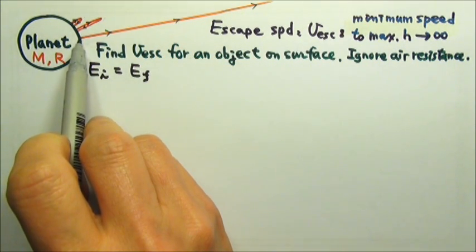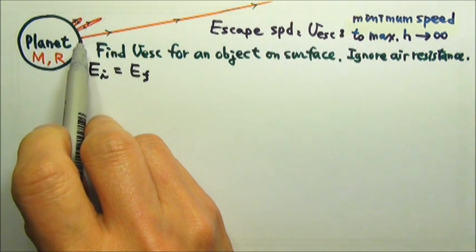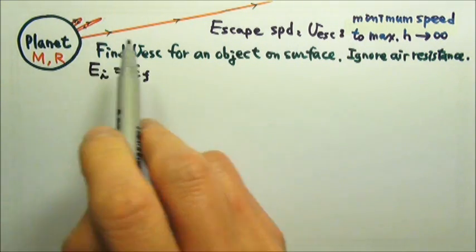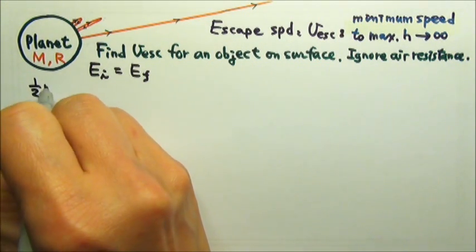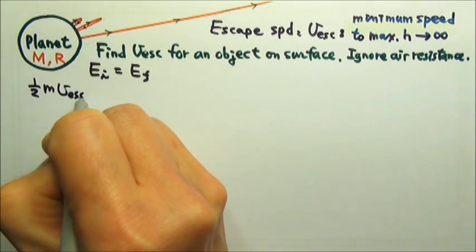At the beginning, the object is on the surface of the planet, and it has a speed that is the escape speed. So it has one half m v_esc squared.